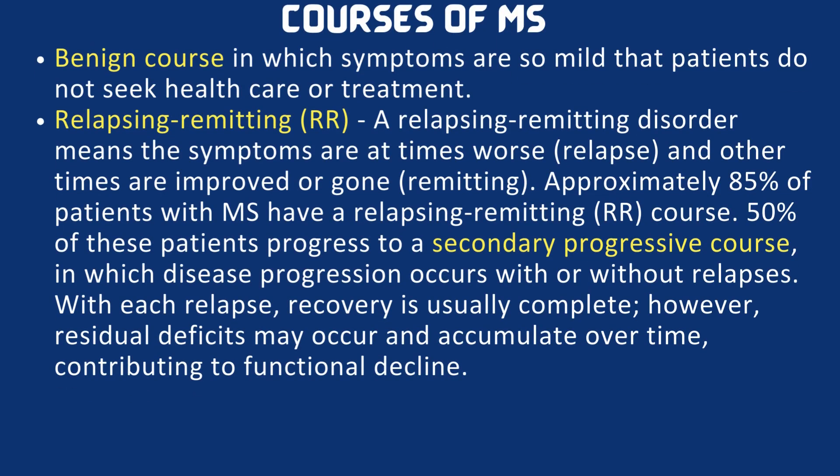Next are the courses of multiple sclerosis. First is the benign course, in which symptoms are so mild that patients do not seek health care or treatment. Next is the relapsing-remitting course, where symptoms are at times worse and other times improved or gone. Approximately 85% of patients with multiple sclerosis have a relapsing-remitting course. 50% of these patients progress to a secondary progressive course in which disease progression occurs with or without relapses. With each relapse, recovery is usually complete; however, residual deficits may occur and accumulate over time contributing to functional decline.